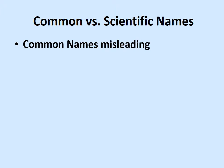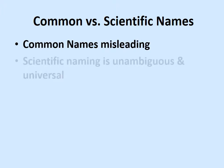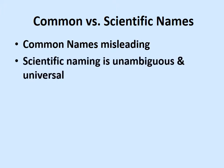Scientists also use Latin names because common names tend to be misleading. When I first moved to California, someone referred to a road called Tamarack Ridge. Something came up about the trees up there, the Tamaracks. Coming from back east, Tamarack to me is a species in the Larch family. But sure enough, they were referring to Lodgepole Pine — two completely different trees.